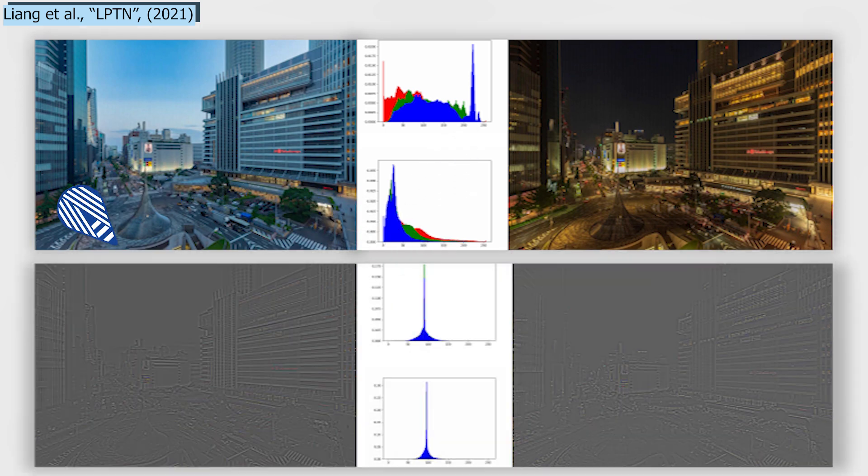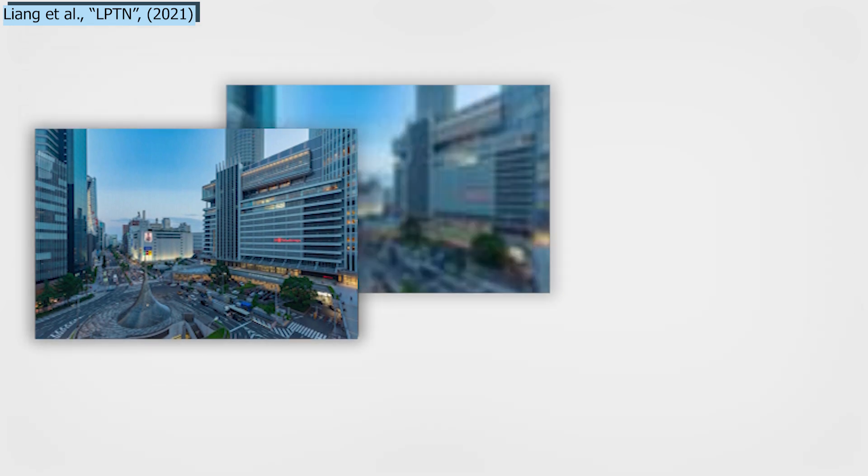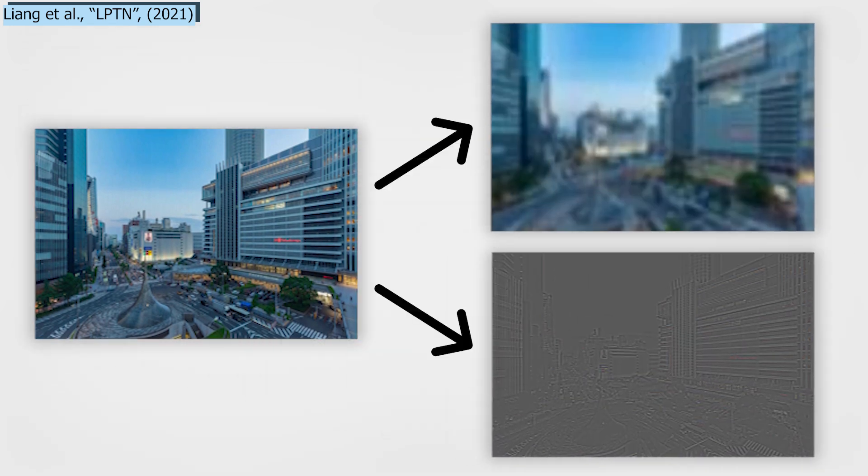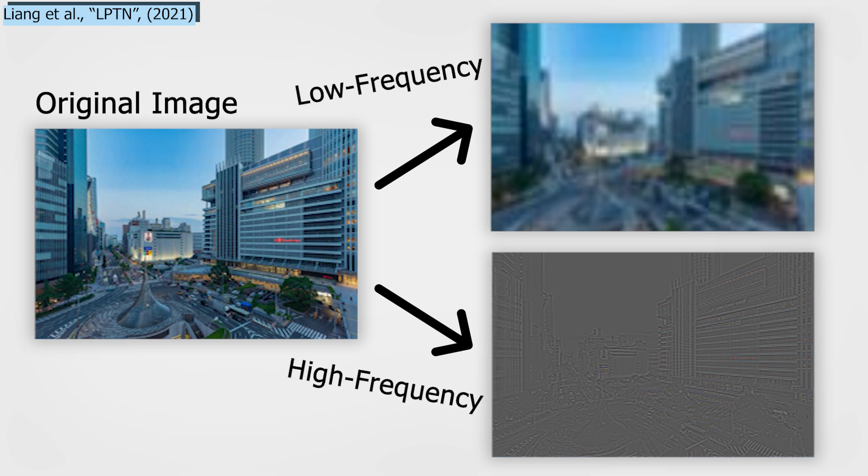Whereas the content details, which we want to keep when translating an image into another style, can be adaptively refined on high-frequency components. This is where it becomes interesting. These two components can be divided into two tasks that can be performed simultaneously by the GPU.